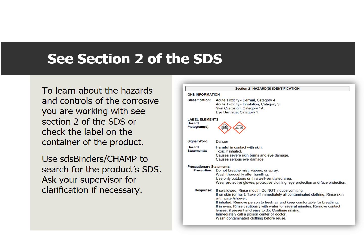To learn about the hazards and controls of the corrosive you are working with, review Section 2 of the SDS or check the label on the container of the product. Use SDS Binders or CHAMP to search for the product's SDS. Ask your supervisor for clarification if necessary.